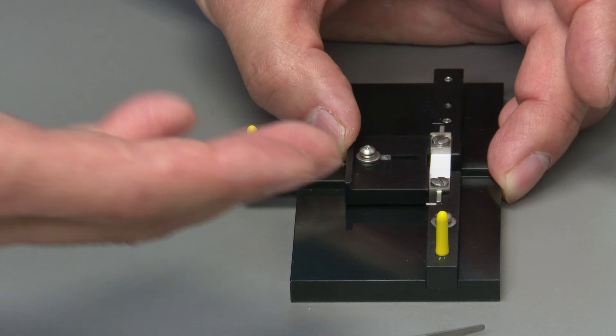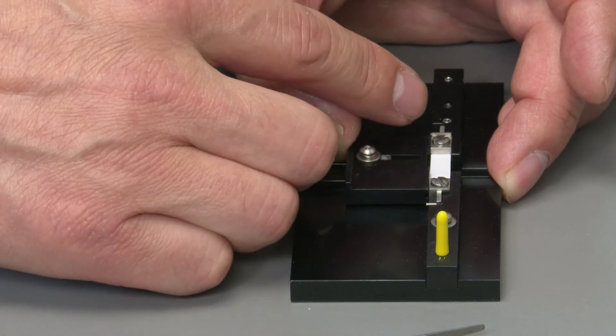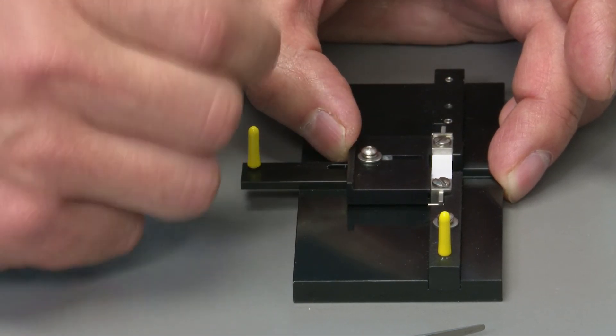Then you can use a caliper to measure the distance between the two clamps to get the length of the sample.